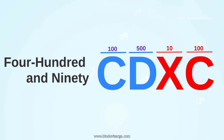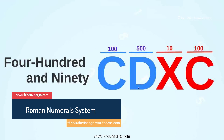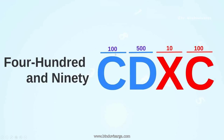Let's take one more example: 490. This is a big number. We have the Roman numerals CDXC. Let's break the entire number into two parts — CD and XC. For CD: the smaller number C is 100 and the larger number D is 500, so we take 100 from 500, giving 400. The same principle applies for XC: taking 10 from 100 gives 90. So 400 plus 90 equals 490.